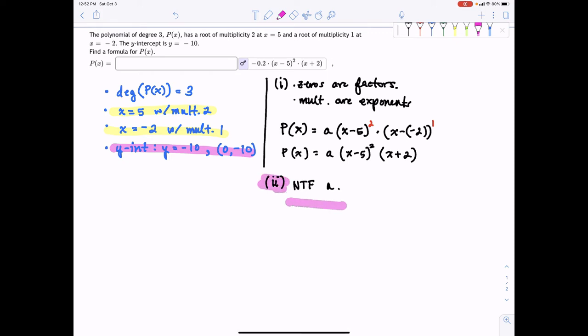The fact that the y-intercept is at negative 10, meaning the ordered pair is 0, negative 10, we can use this to plug and chug to find a.